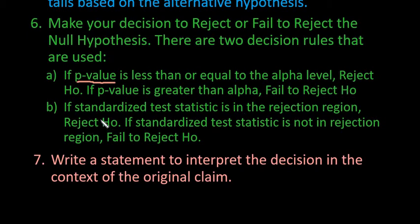If you use the other method with the rejection region, you would set up your rejection region in your model based on your critical value from whichever model you are using. If it's a t-distribution, you would find your t-score; if it was a normal distribution, you would find your z-score. Then you would decide: is your standardized test statistic in the rejection region? If it is, you reject. If it's not, you fail to reject.